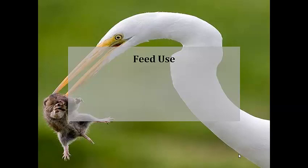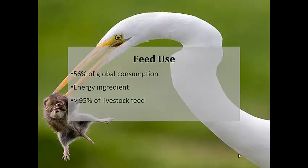Feed use. Recall from the charts we saw earlier, 56% of global consumption is used for animal feed. Corn is a high energy ingredient in feed and used for livestock such as cattle, pigs, lambs, chickens and turkeys. It is highly desirable because when fed to the animals, it significantly shortens the time to fatten the livestock. In the US, some 95% of livestock feed is made of corn. Although there are good substitutes such as low-grade wheat and soybean, corn is still the most commercially viable and preferred choice for farmers.